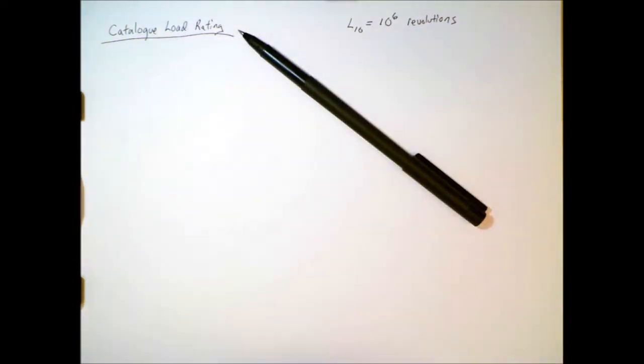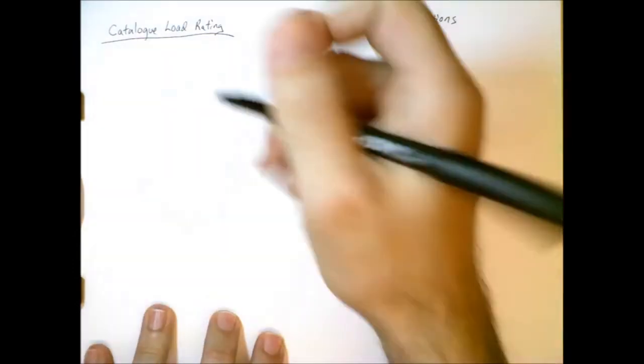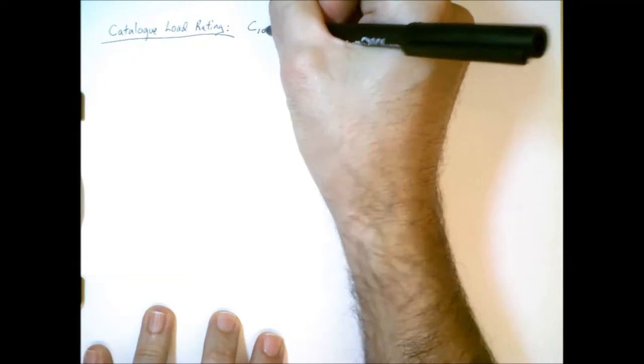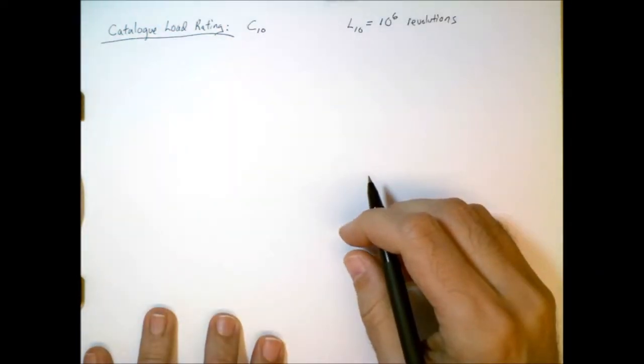In addition to having a standard way of describing the life of bearings, we also have a standard way of describing the load on bearings, and we call this the catalog load rating. And the symbol we use for that is C10.